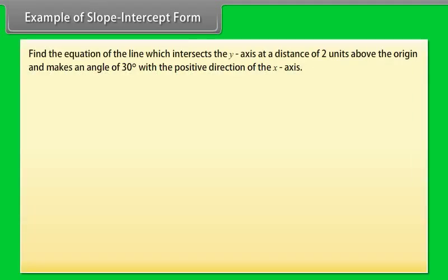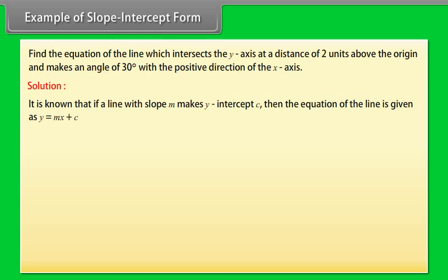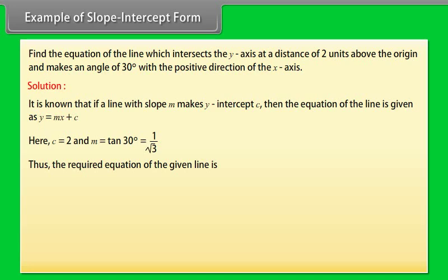Example: Find the equation of the line which intersects the y-axis at a distance of 2 units above the origin and makes an angle of 30 degrees with the positive direction of the x-axis. Solution: If a line with slope m makes y-intercept c, then the equation is y = mx + c. Here c = 2 and m = tan 30° = 1/√3. Thus the required equation is y = x/√3 + 2, which can be written as 2x − √3·y + 2√3 = 0.